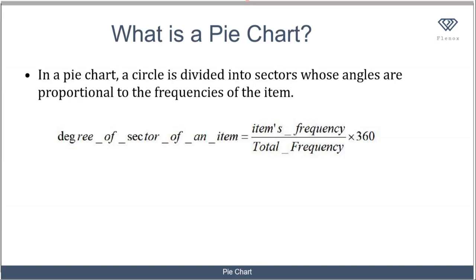Now let's look at pie charts. What is a pie chart? In a pie chart, a circle is divided into sectors whose angles are proportional to the frequencies of the item.